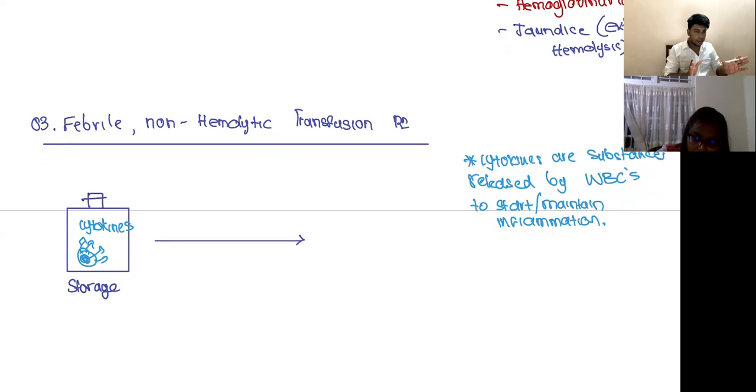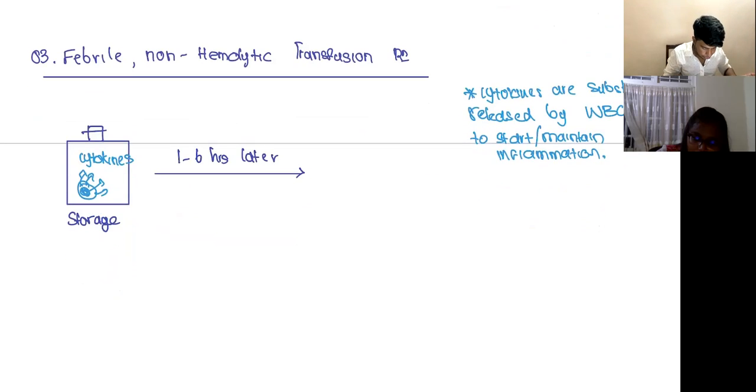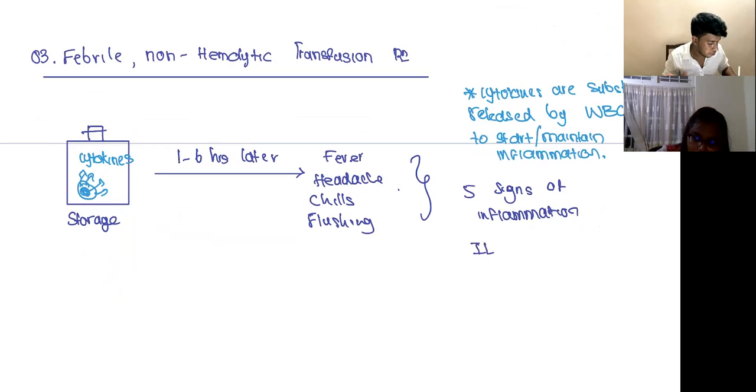So what happens is when you have blood in storage, the white blood cells in the blood are going to release cytokines. It's in an unusual environment, so it's going to release cytokines. And then one to six hours after giving the transfusion, the patient can develop fever, headache, chills, flushing, basically the five signs of inflammation. IL-1 stimulates fever and so on.